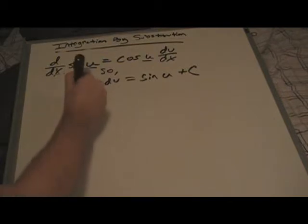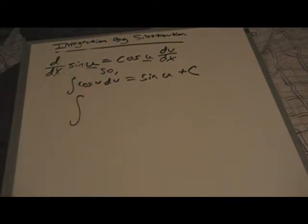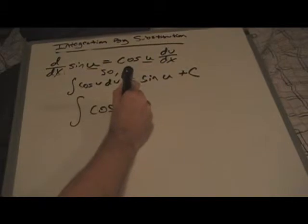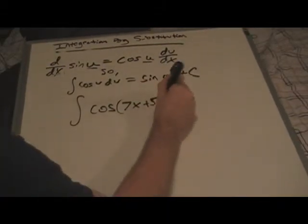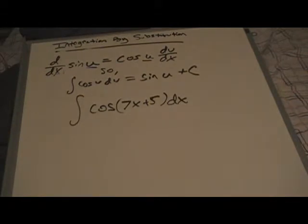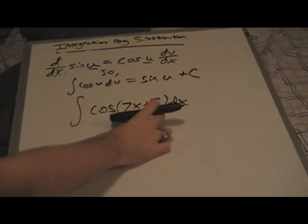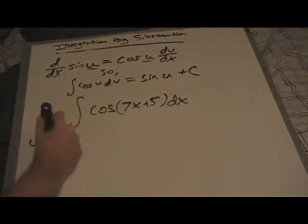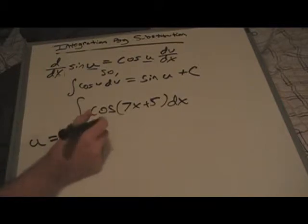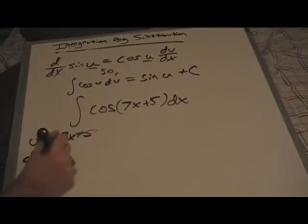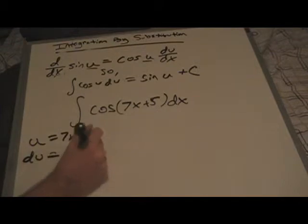So, the first example we do is just right out of the book. It's integral of cosine of 7x plus 5 dx. And with this function, we're going to simply do what we've been doing with our substitution. And we're gonna take the 7x plus 5 and make that u. And now, you guys probably already figured this out, that du is 7 dx.